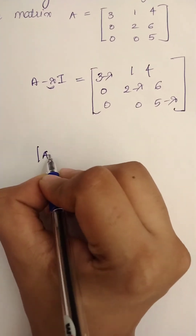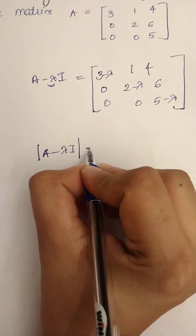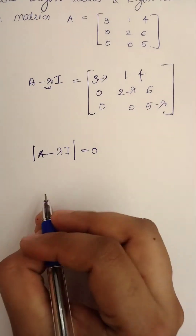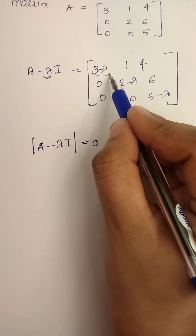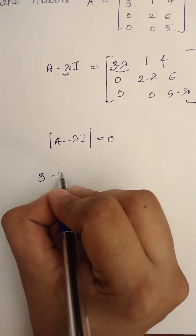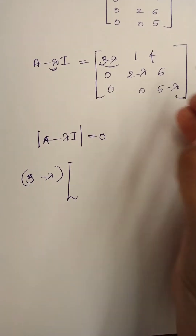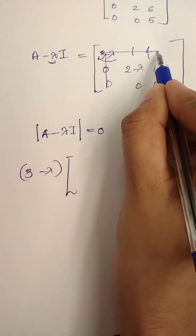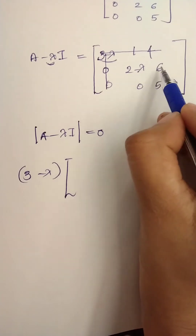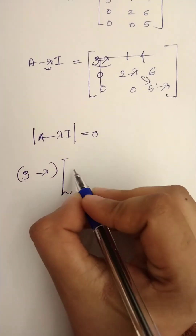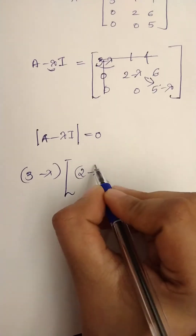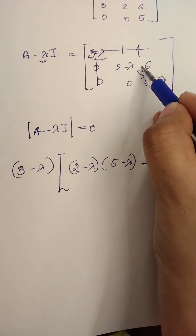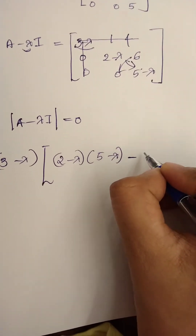The second step is the determinant of A minus lambda I equals zero. Looking at the first element, 3 minus lambda, we expand along the first column. The minor gives us: 2 minus lambda into 5 minus lambda, minus 6 into 0. Since 6 into 0 is 0, that term vanishes.